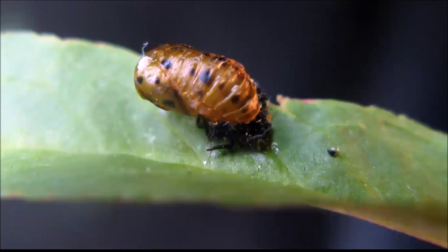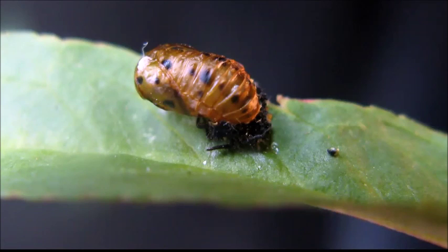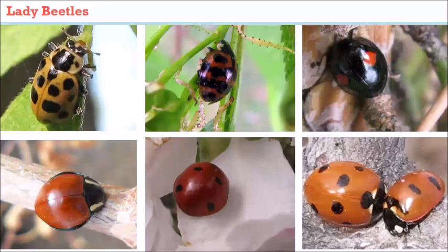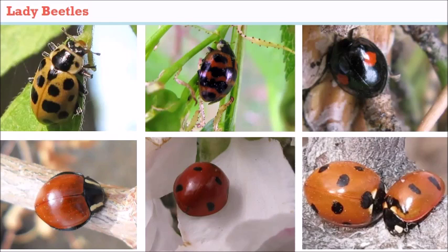So this is a pupal case of lady beetles. When you ask someone to name a beneficial insect, lady beetles is probably what they'll think of first. The great thing about lady beetles is that both the adults and their young — the larvae — feed on prey. They're both predacious, so in their lifetime they can feed on a lot.